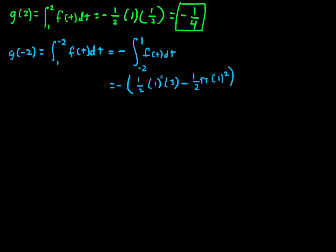Okay, and from there we get negative still, 1 half times 1 times 3 is 3 halves. Negative 1 half times pi times 1 squared is negative pi over 2. And that, in the end, equals positive pi over 2 minus 3 halves.